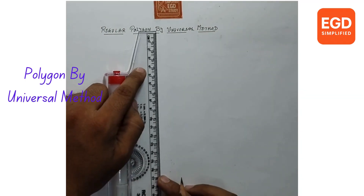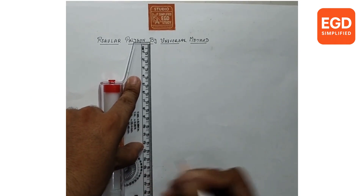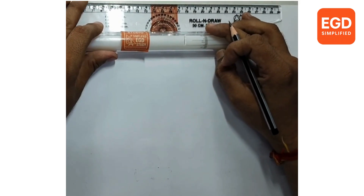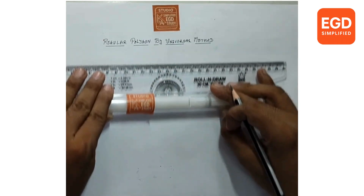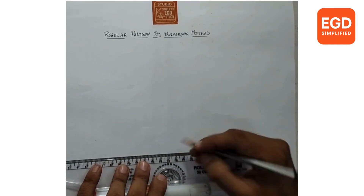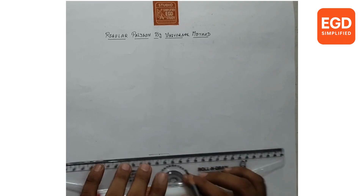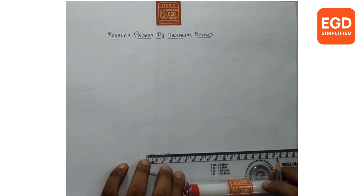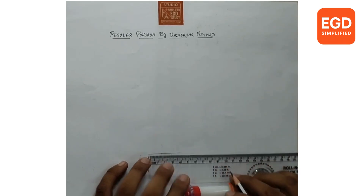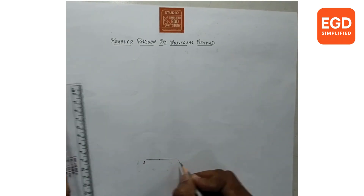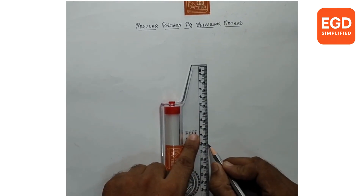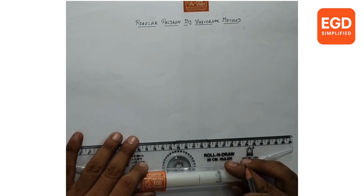From the title, take about 15cm distance. To draw a straight line, align the roller scale with H, roll and draw a line that should be 40mm long. Give the name AB. AB line is 40mm long.